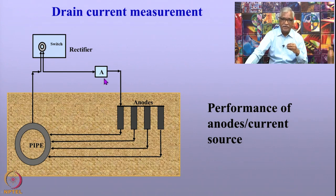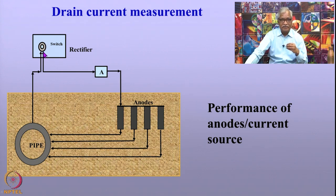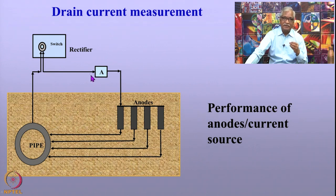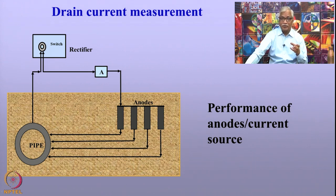The technique used to measure the drain current is relatively simple: insert an ammeter in series in the circuit. At a test station, there is a rectifier in the case of an impressed current system. If it is a sacrificial anode system, you connect the ammeter in series between the pipeline and the anodes, and the current is measured. The current so measured gives an indication about the performance of the anodes or whether anode resistance has increased.